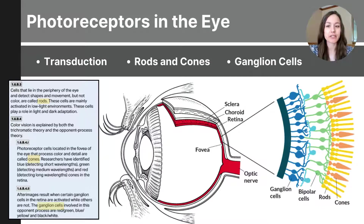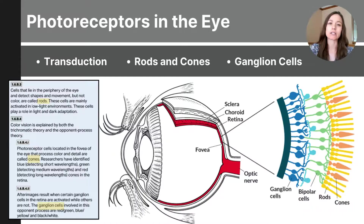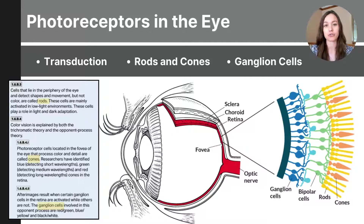As you learned in our previous video, our body has sensory receptors throughout, picking up information from the environment in places like our skin, nose, ears, tongue, and even our eyes. These sensory receptors detect stimuli like light and transform them into electrical messages that can pass through the nervous system to the brain. This process of changing a stimulus detected in the environment into an action potential or electrical impulse is called transduction. The sensory cells in the eyes that transduce light are called photoreceptors.